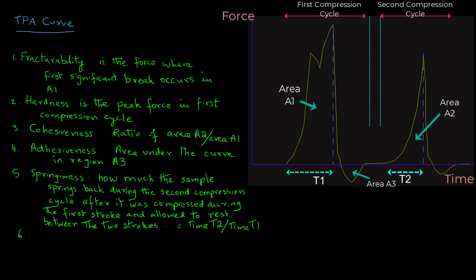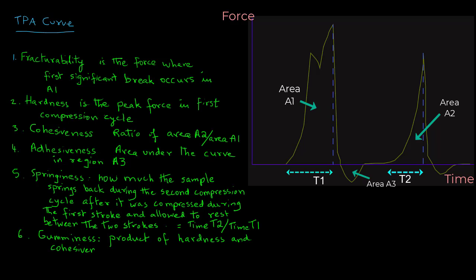The next parameter we can determine is gumminess, which is the product of hardness and cohesiveness. And the last parameter we can determine is chewiness, which is the product of gumminess and springiness. Note that chewiness and gumminess are mutually exclusive because you cannot have a food sample that is both semi-solid and solid.